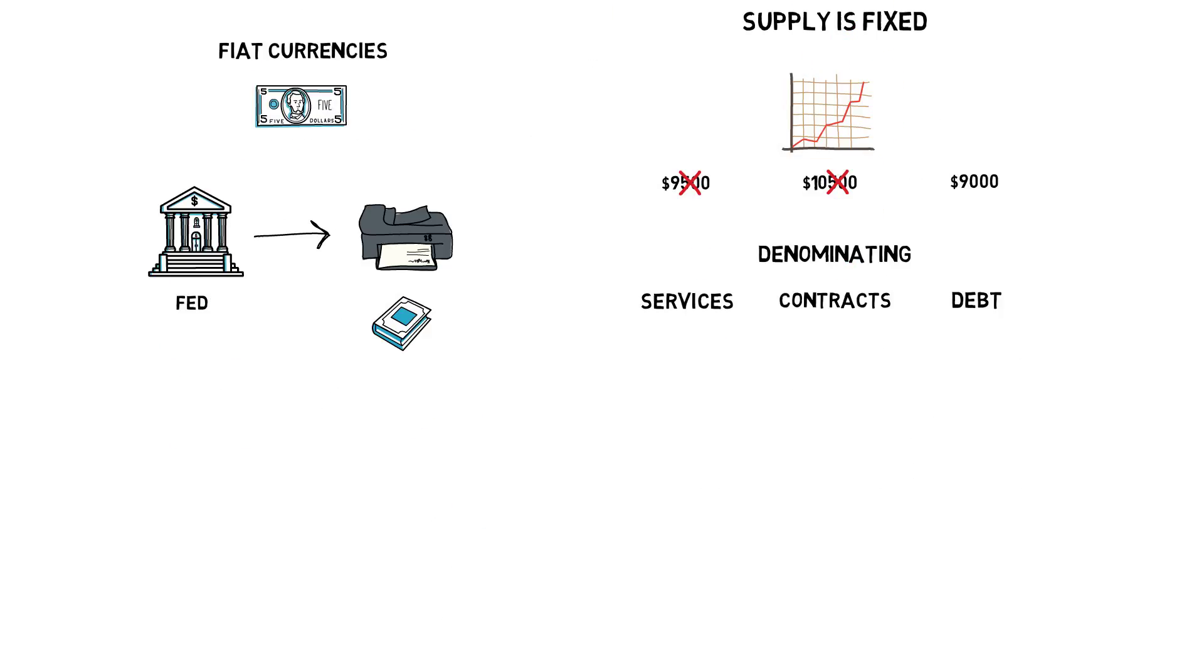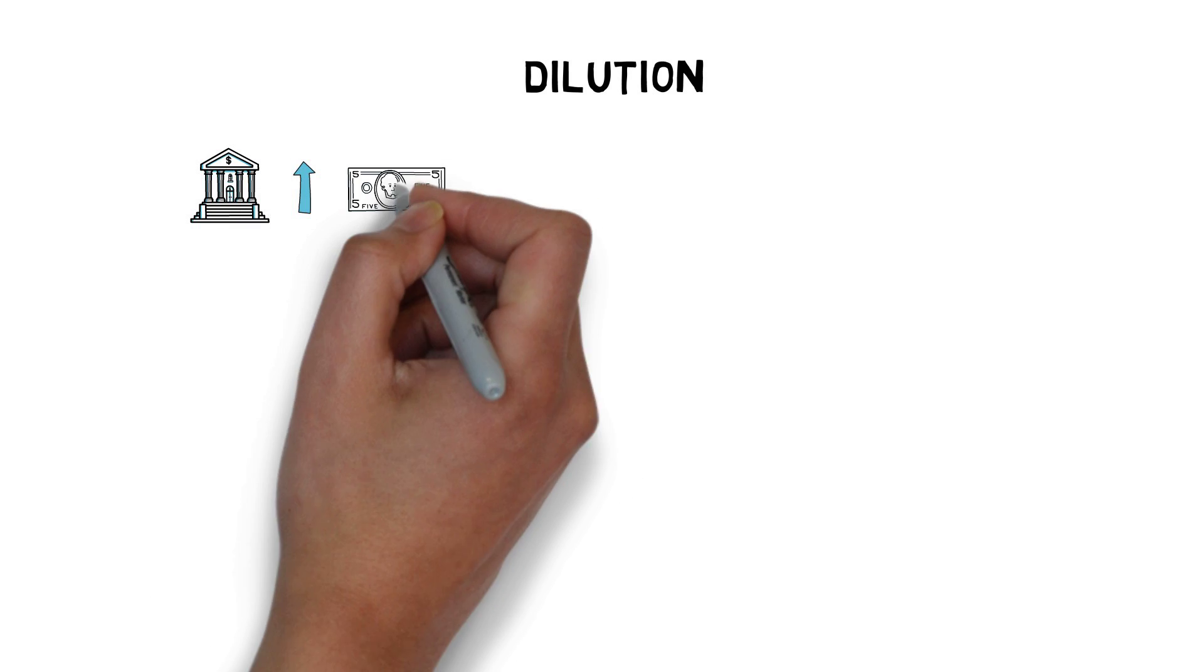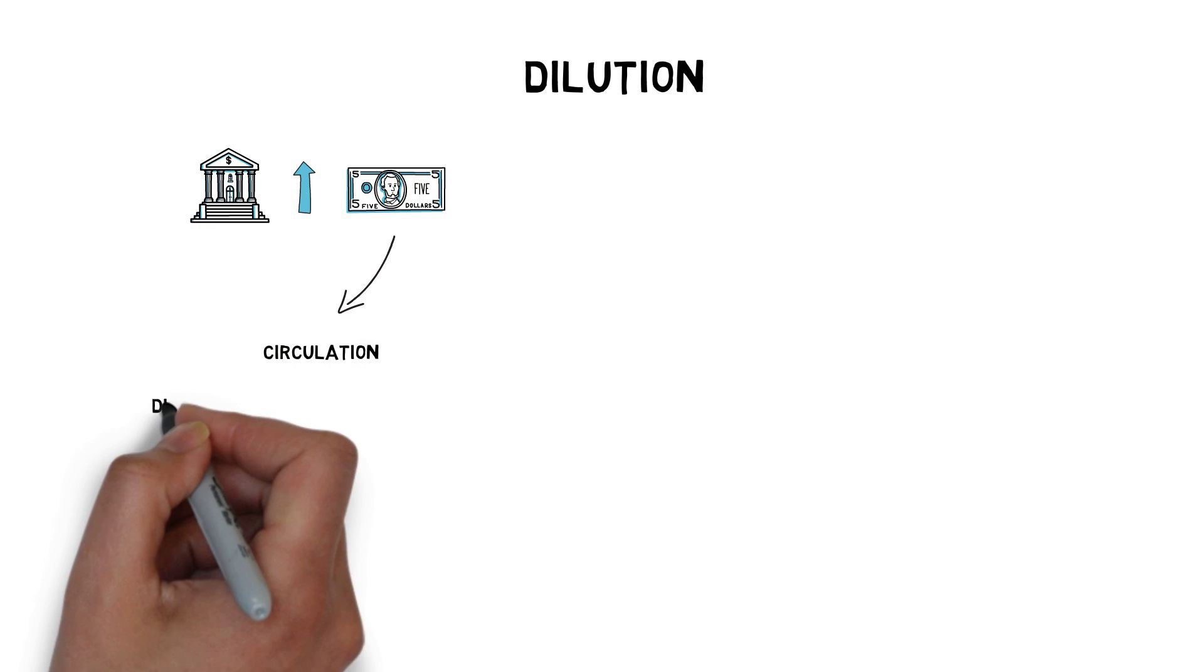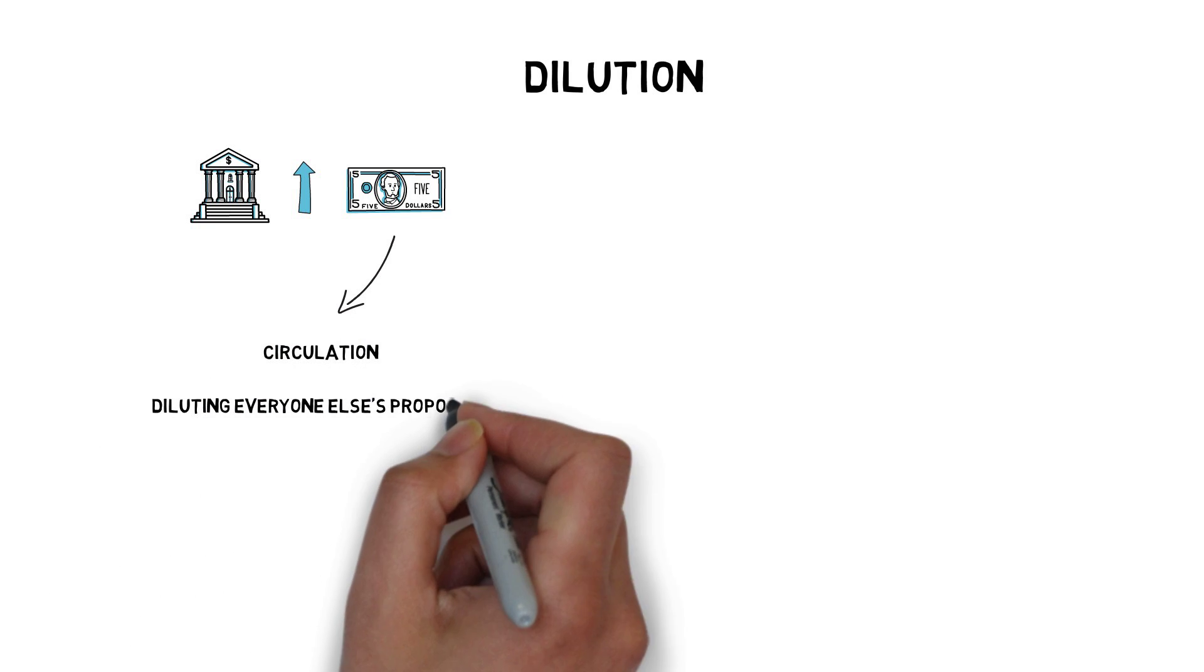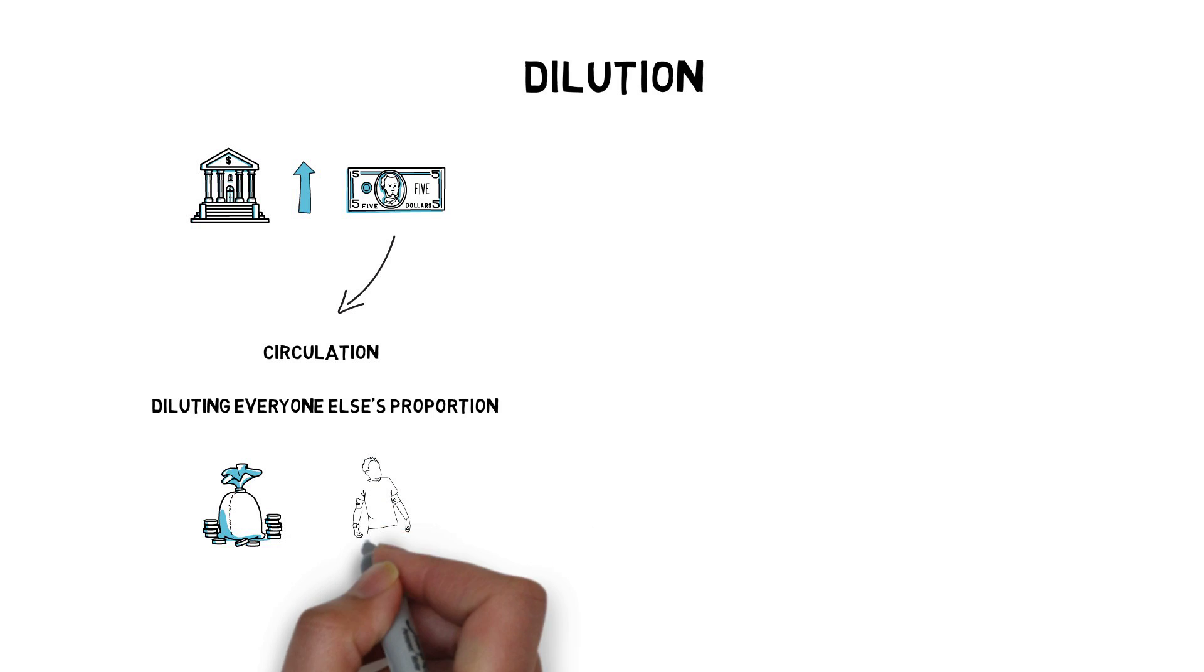So even though elastic money supply can be quite useful to achieve price stability, it comes with a certain problem – dilution. When the Fed increases the supply of dollars by printing new money, that money is put into circulation, diluting everyone else's proportion of the total supply of dollars, basically making them poorer.